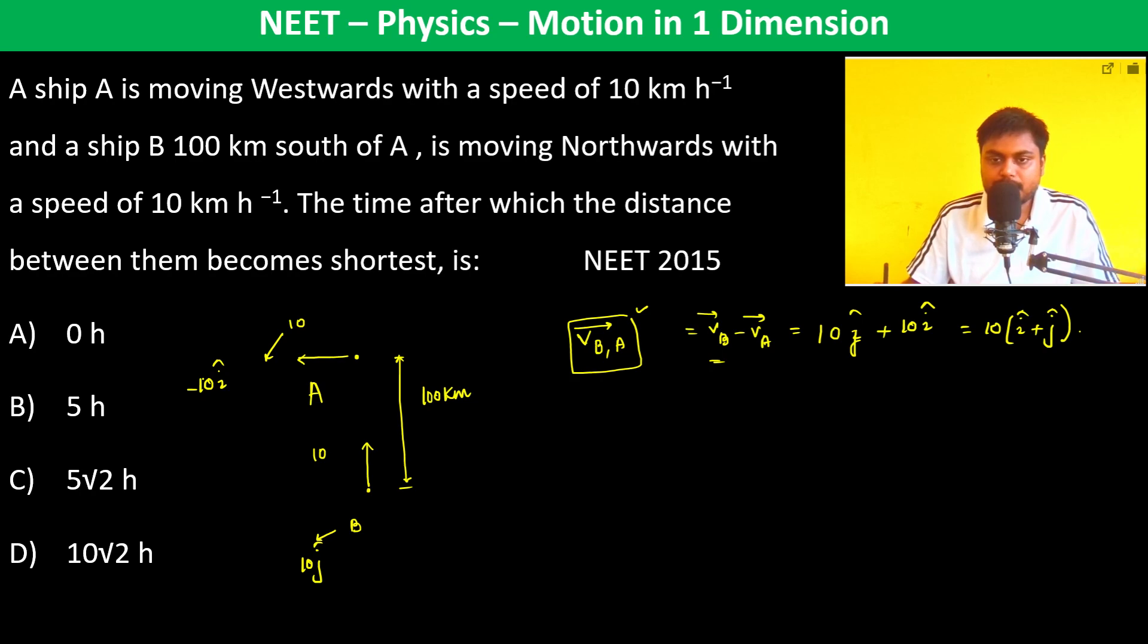So therefore velocity of B with respect to A is going to be in this direction which is 45 degrees.